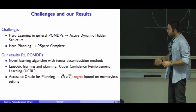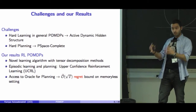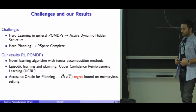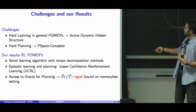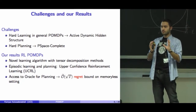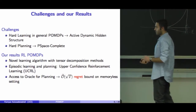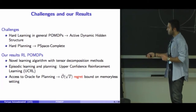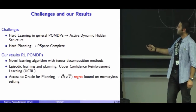Our contribution in this paper is we propose a novel method to do the learning part of the POMDP model based on tensor decomposition methods. We introduce a new UCRL — Upper Confidence Bound Reinforcement Learning — method to do the trade-off between exploration and exploitation. We show that if we have access to an oracle to solve the POMDP problem and give us the optimum policy, we get a regret of order square root of T in the memoryless setting.